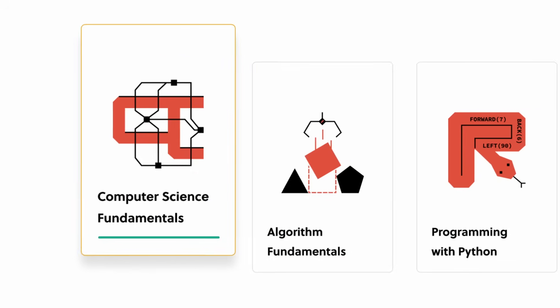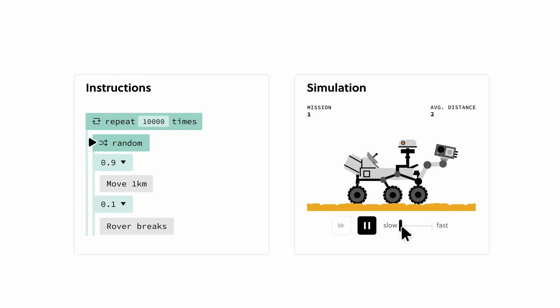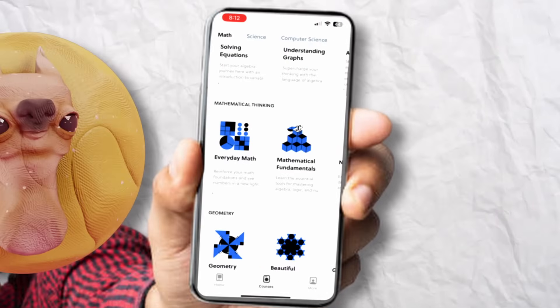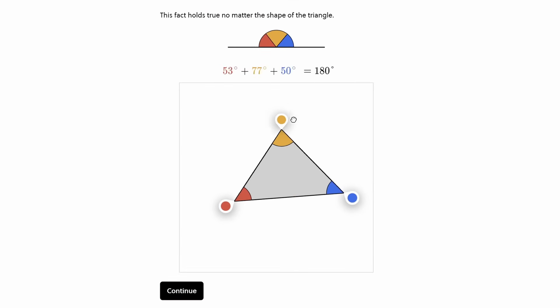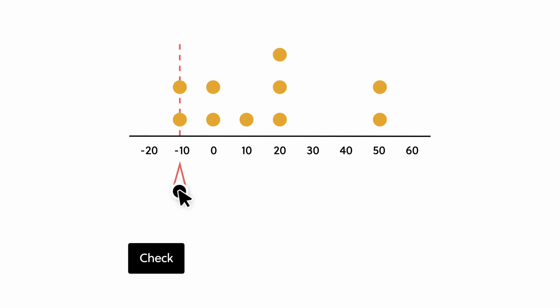That's why I've partnered up with Brilliant.org for this video, because they make the whole process way easier to understand with their app. There's literally thousands of lessons here, ranging from math basics all the way to more complex stuff like vectors and even astrophysics. They add new lessons each month, and I'm using Brilliant to touch up on the basics.